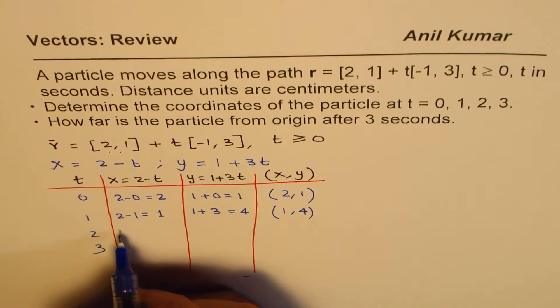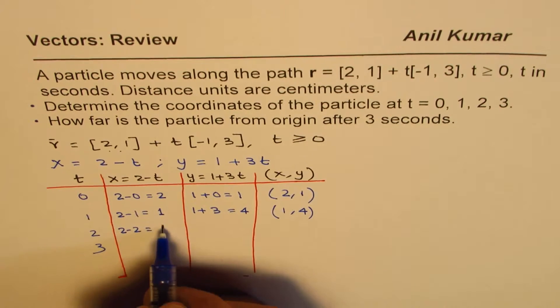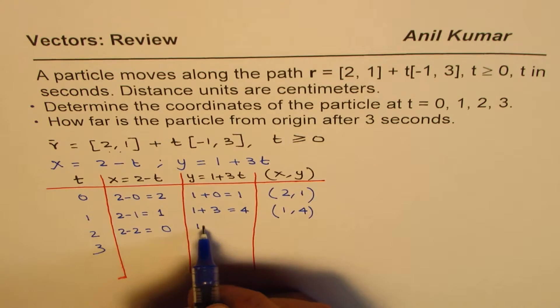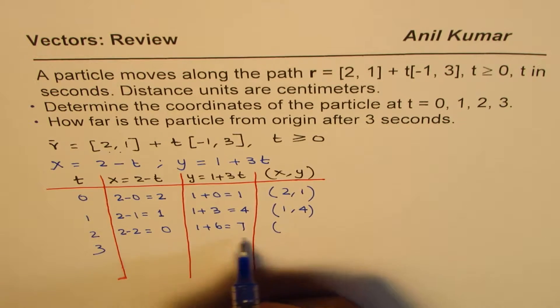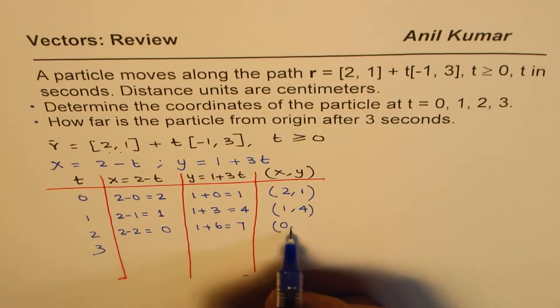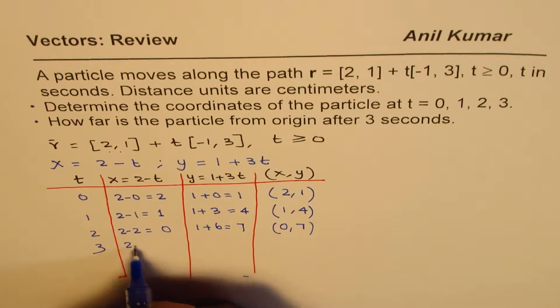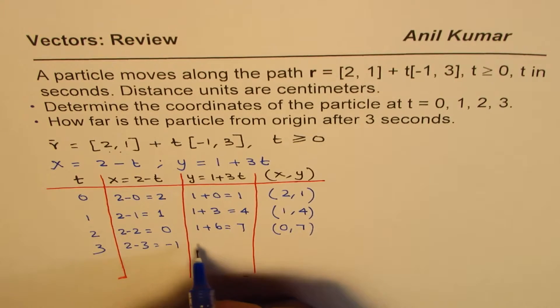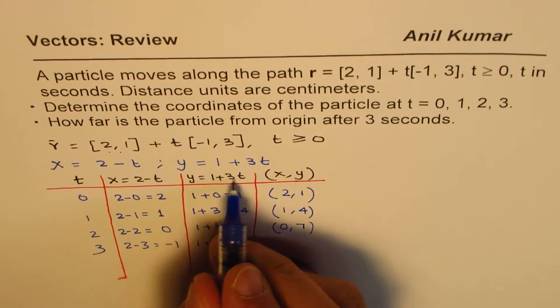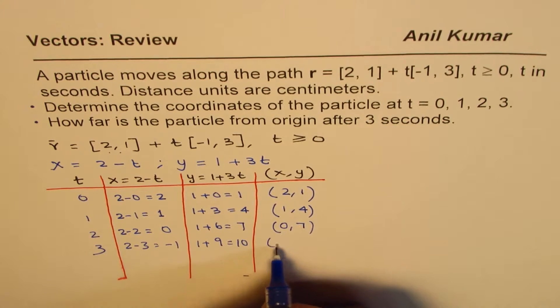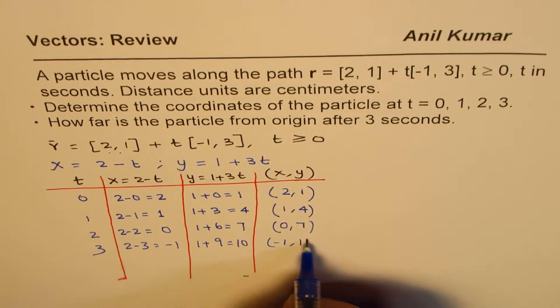Now let's put t as 2. So we get 2 minus 2 equals 0, and we get 1 plus 6 equals 7, and the values are (0,7). For 3, it will be 2 minus 3, which is minus 1, and 1 plus 3 times 3 is 9, we get 10, and so we get (-1,10).